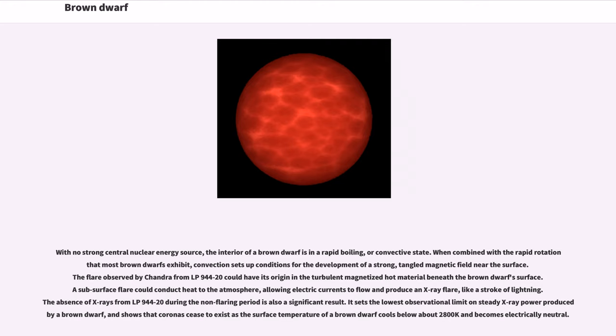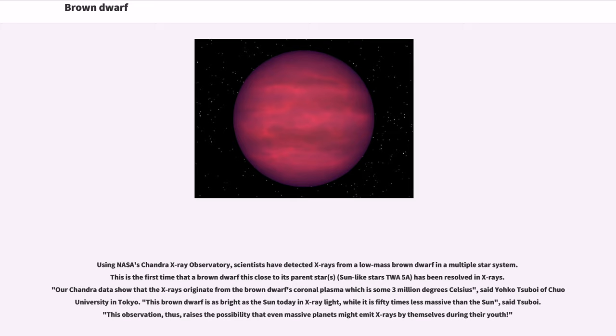Using NASA's Chandra X-ray Observatory, scientists have detected X-rays from a low mass brown dwarf in a multiple star system. This is the first time that a brown dwarf this close to its parent star has been resolved in X-rays. Our Chandra data show that the X-rays originate from the brown dwarf's coronal plasma, which is some 3 million degrees Celsius, said Yoko Tsuboi of Chuo University in Tokyo. This brown dwarf is as bright as the sun today in X-ray light, while it is 50 times less massive than the sun. This observation thus raises the possibility that even massive planets might emit X-rays by themselves during their youth.